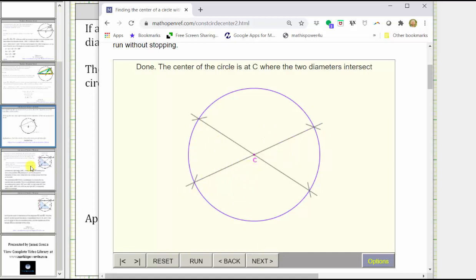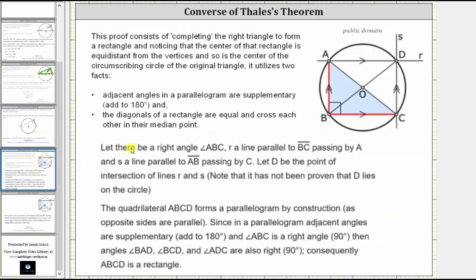And now let's prove the converse of Thales' Theorem. This proof consists of completing the right triangle to form a rectangle, and noticing that the center of that rectangle is equidistant from the vertices, and so is the center of the circumscribing circle of the original triangle, and it utilizes two facts. Adjacent angles in a parallelogram are supplementary, or add to 180 degrees, and the diagonals of a rectangle are equal and cross each other in their median point.